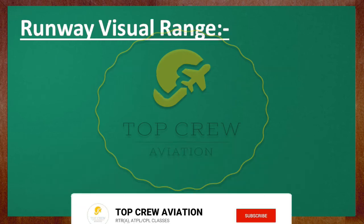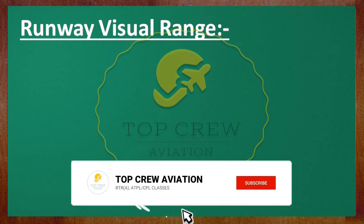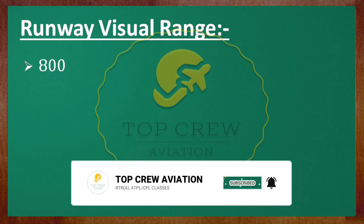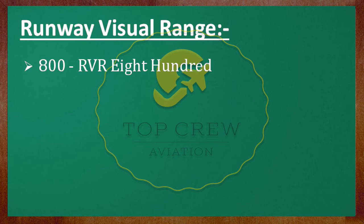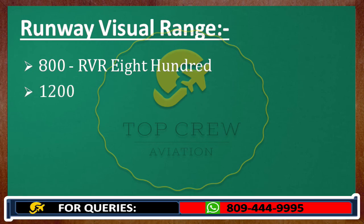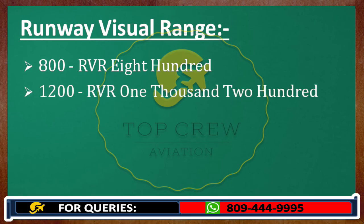Now let's talk about runway visual range. If written 800, we would transmit it as RVR 800. If written 1200, we would transmit it as RVR 1200.